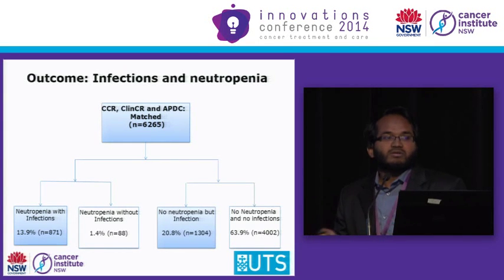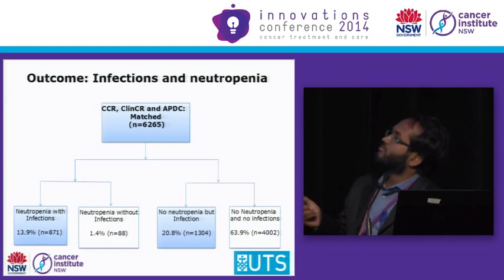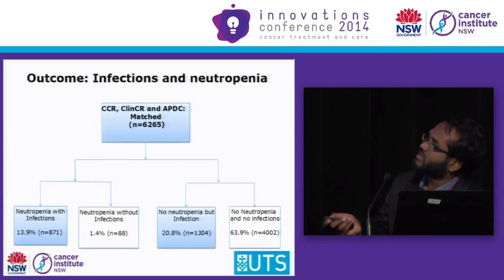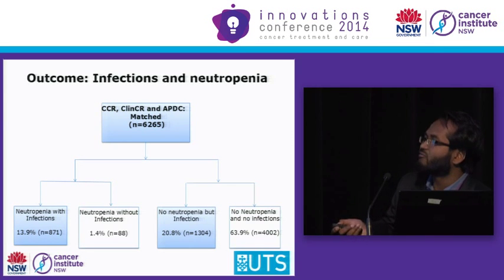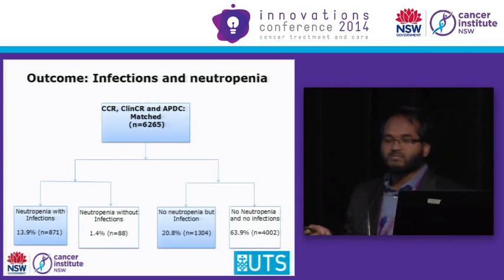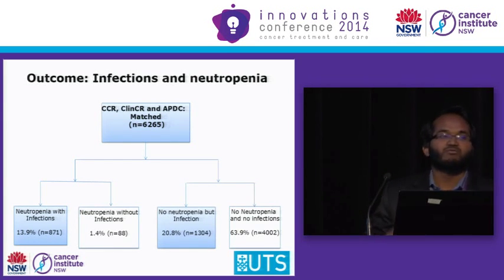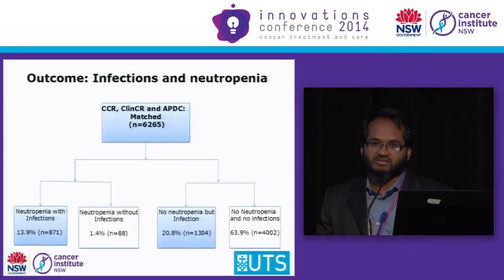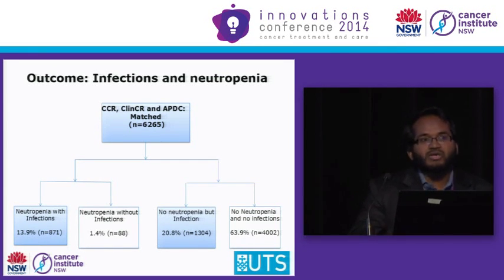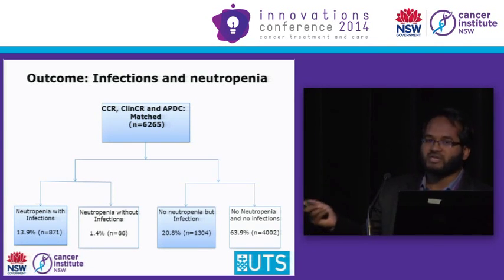This diagram shows the relative prevalence of neutropenia and infections. Among all our study populations, neutropenia with infections is prevalent in only around 14%, whereas no neutropenia but with infections occurred in around 21%. So the question arises: why are those patients getting infections? Are we using a broad spectrum of infectious definitions that included non-neutropenic infections?